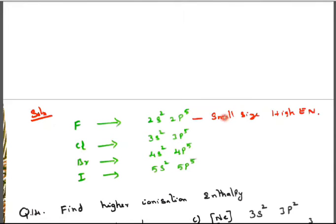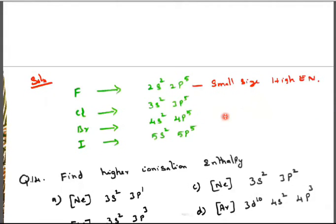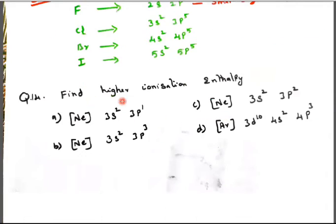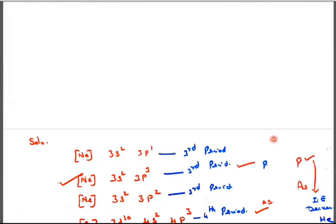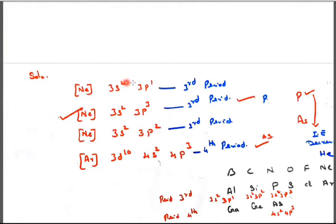So find the higher ionization enthalpy. In neon 3s² 3p¹, in neon 3s² 3p², in neon 3s² 3p³, and neon 3d¹⁰ 4s² 4p³. Let us see the question. Neon 3s² 3p¹ - it is third period. And here, even here also it is third period.